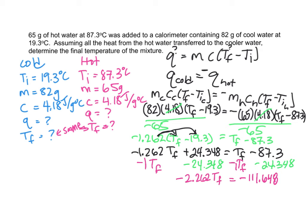And now I'm just going to divide both sides by negative 2.262. And then I will have finally isolated final temperature, which comes out to 49.36 degrees Celsius.